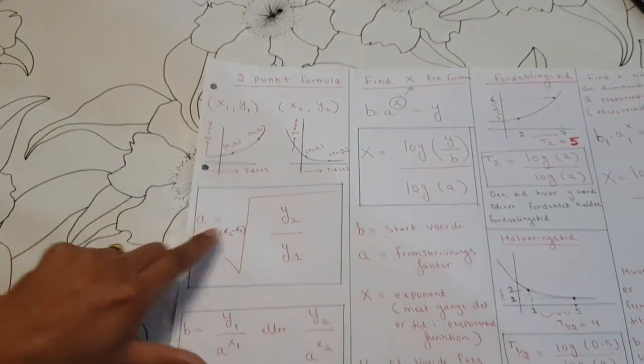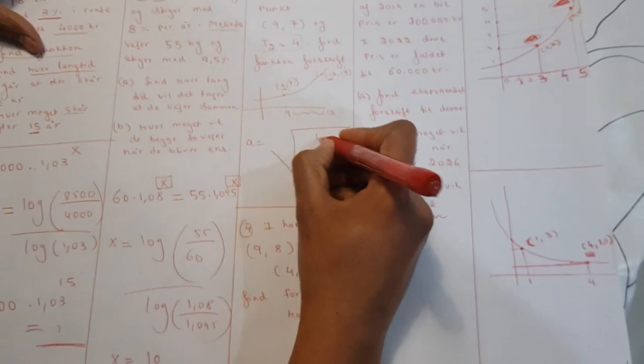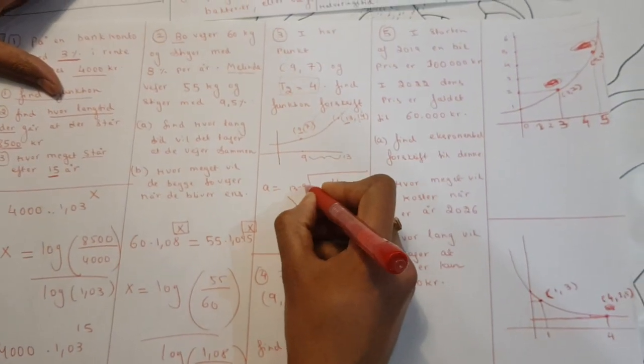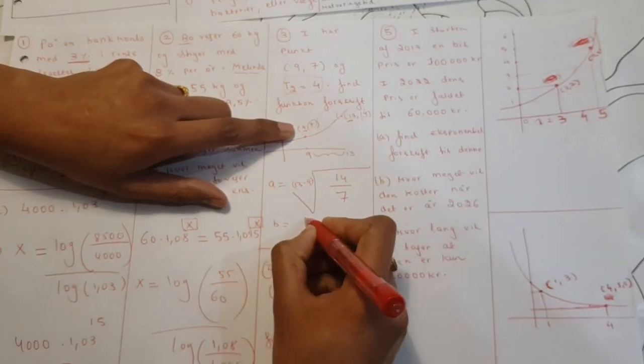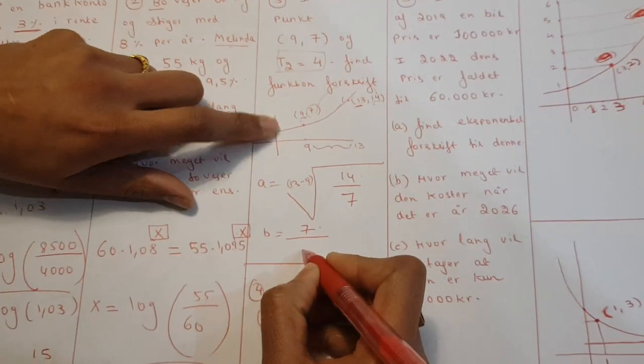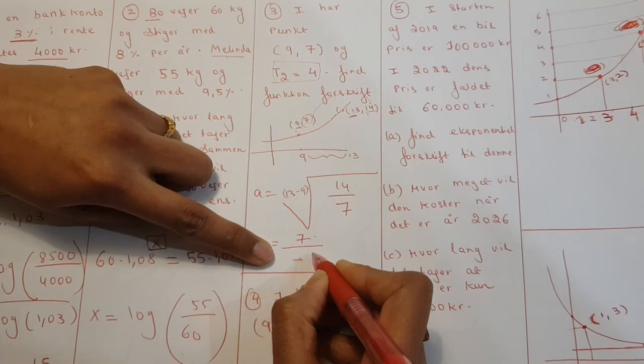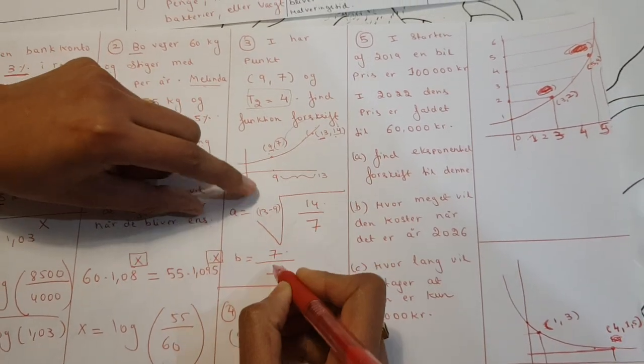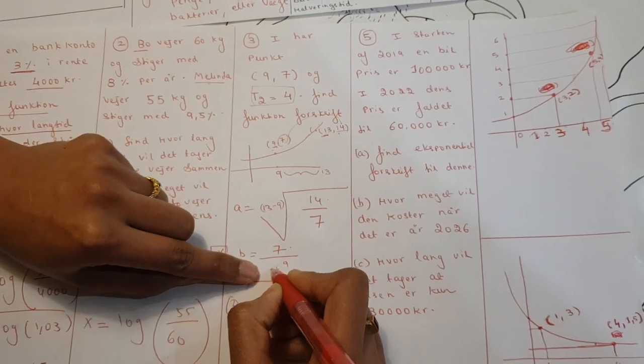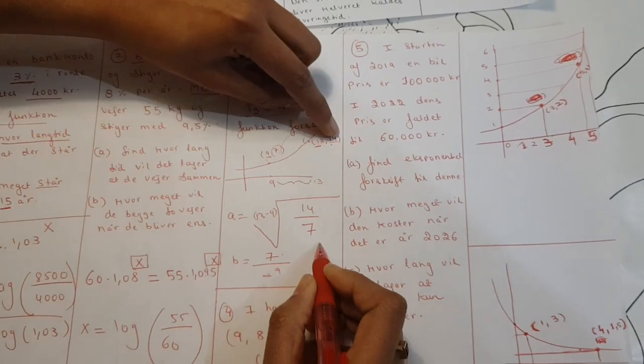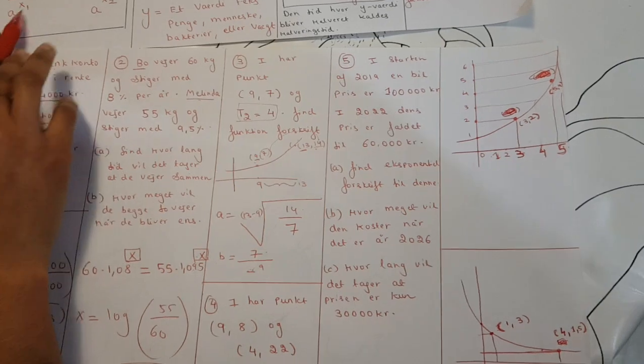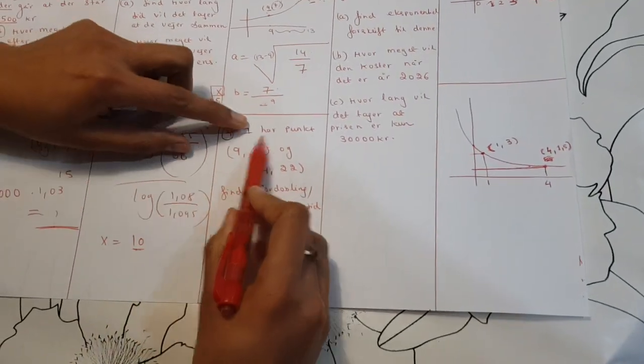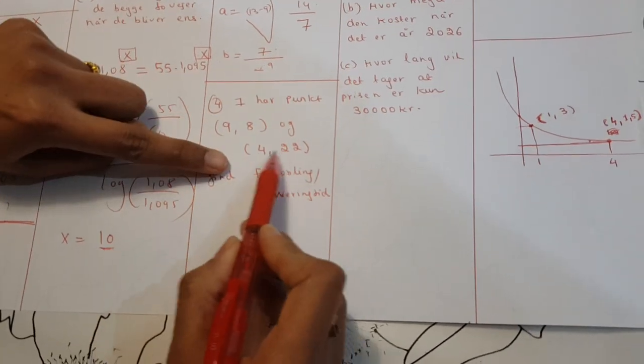Now you have two points. So you can use the two-point formula. You can find a, which is fjorten divided by nine, or you can find fourteen minus nine. And you can find b, you can use nine divided by a. And then you uplift by nine. So if you have a, you can use it here or uplift by nine, and you can also use point number two, whichever point you use.